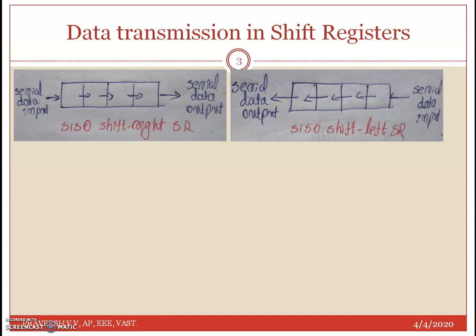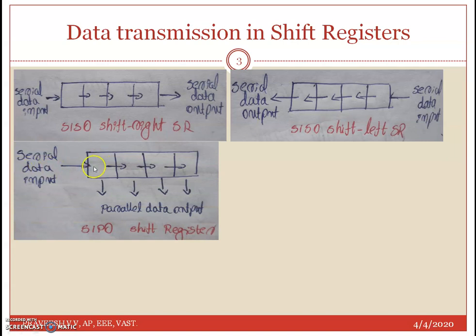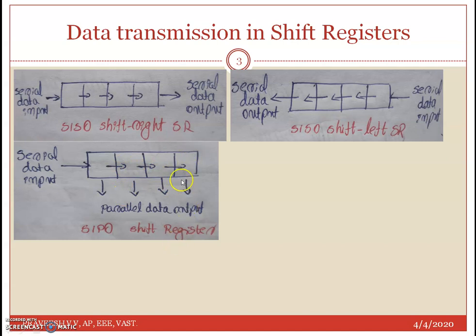The first classification is SISO — serial in serial out. The second classification is where the input and the output are parallel. In this case, data is input one bit at a time serially over multiple clock cycles, but taken out simultaneously in one clock cycle. The output is taken simultaneously. This is the Serial In Parallel Out register, and its symbol is SIPO — that is the second classification.